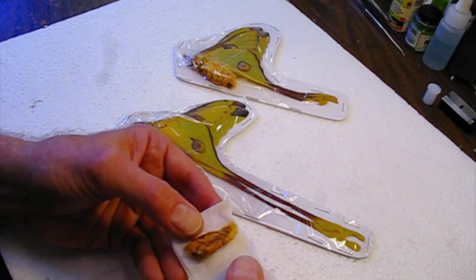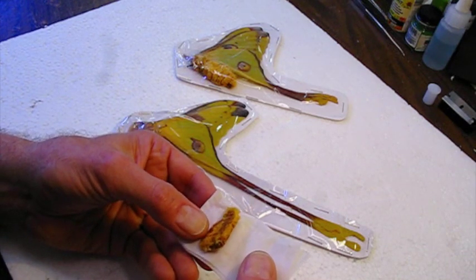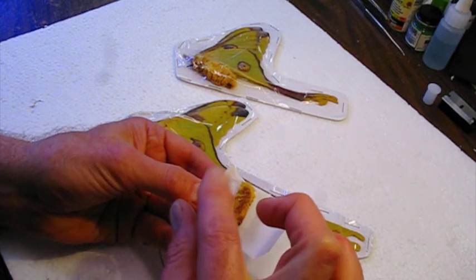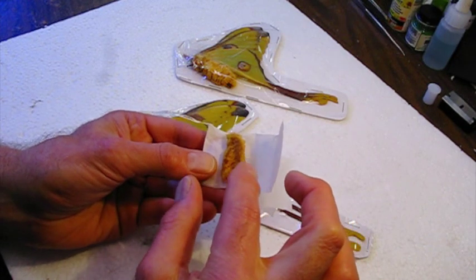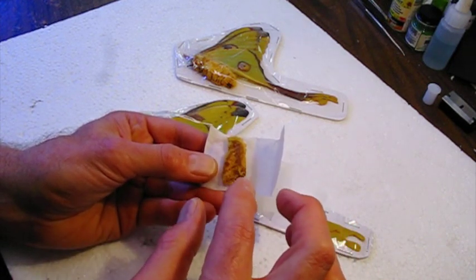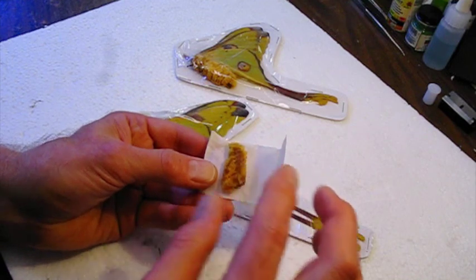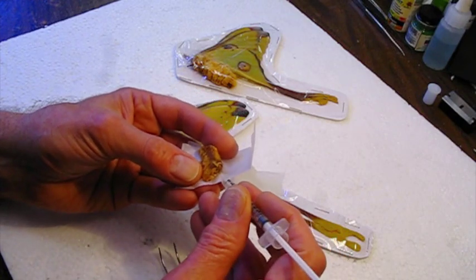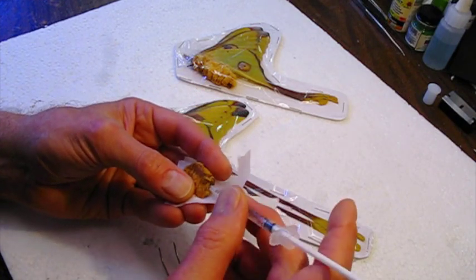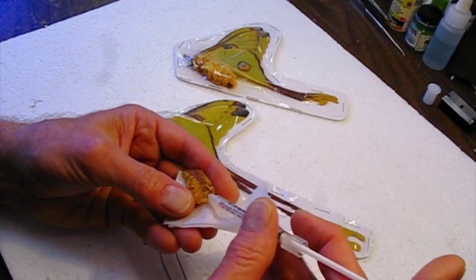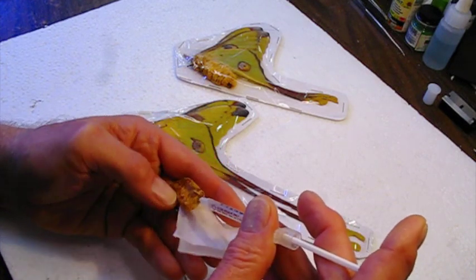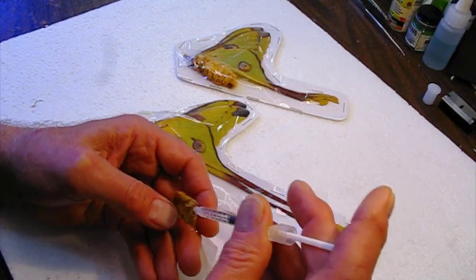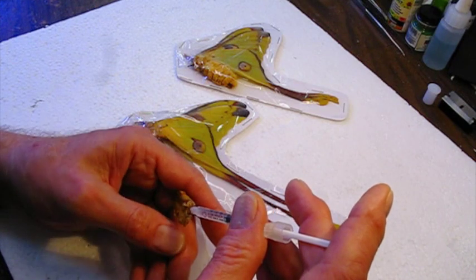I think what I might do with this is hydrate it first. Try and get it a little soft and flatten it out so it looks more natural. And then soak it in acetone to get the grease out of it. I think what I'll do first is I've got some water here. I'm going to inject some water into this abdomen. Some of it's leaking out, but this should work.